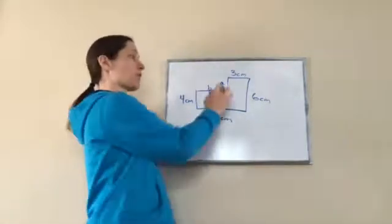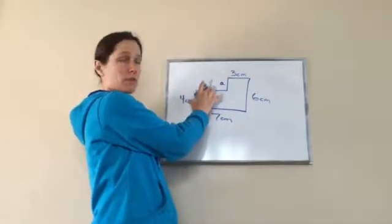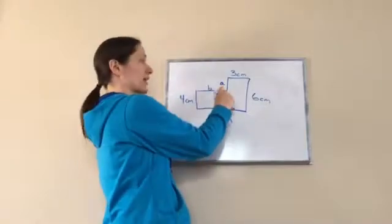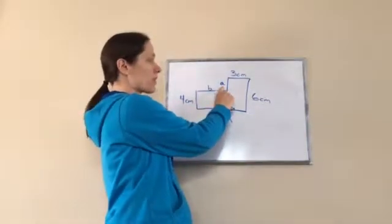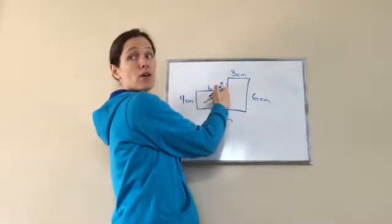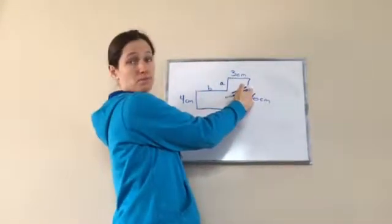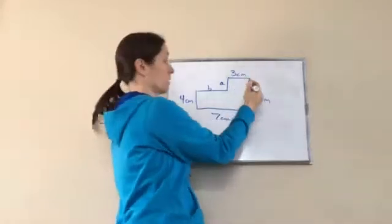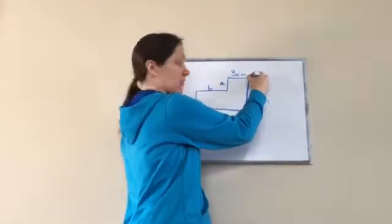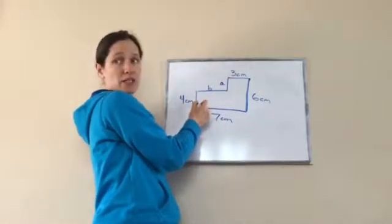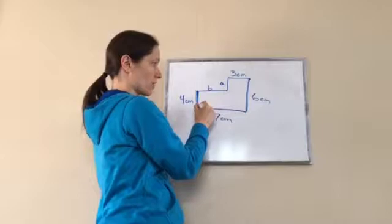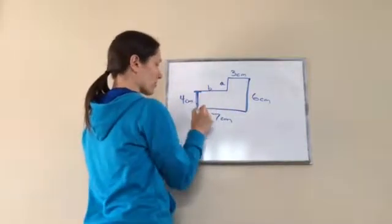So do you think there's a way I can discover what a and what b are by looking at this? Yes, there is. The best way, let's look at a first. The best way to discover what a is, let's look at the line that's parallel to it. Six, right? You see that that whole thing is six. Let's look at another line that's parallel to it. Four. So from here to here is four.